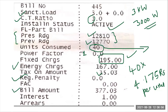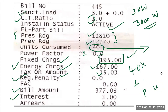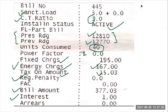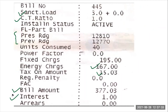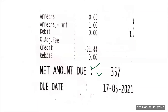The bill amount is calculated as: fixed charge (195) plus energy charge (165) plus tax amount (15), which gives 377.03 rupees. There is also a charge for interest on company equipment, transmission lines, and appliances belonging to the supply company, which is 1 rupee. So the running total becomes 378.03 rupees.